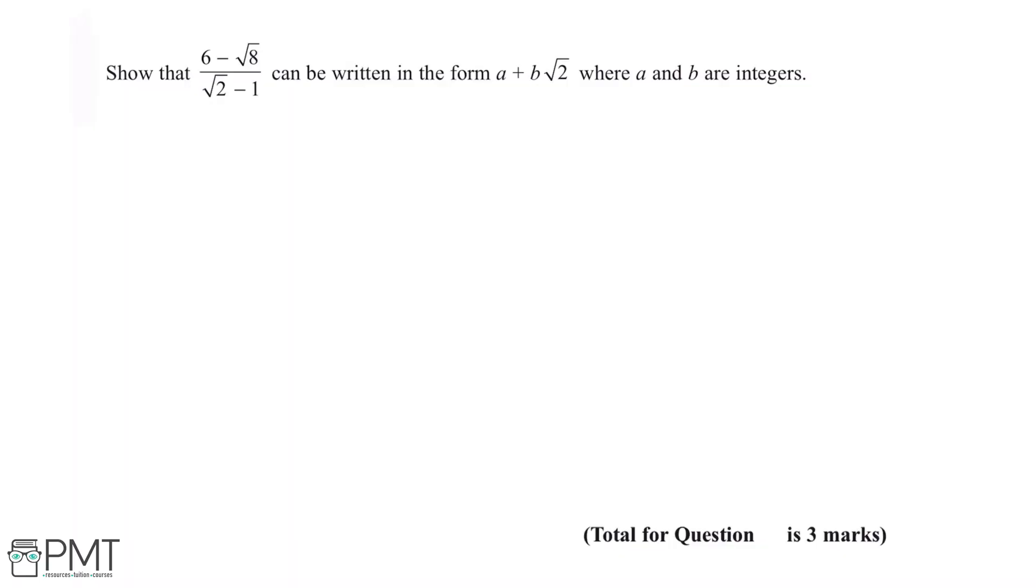Show that (6 - √8)/(√2 - 1) can be written in the form a + b√2 where a and b are integers.